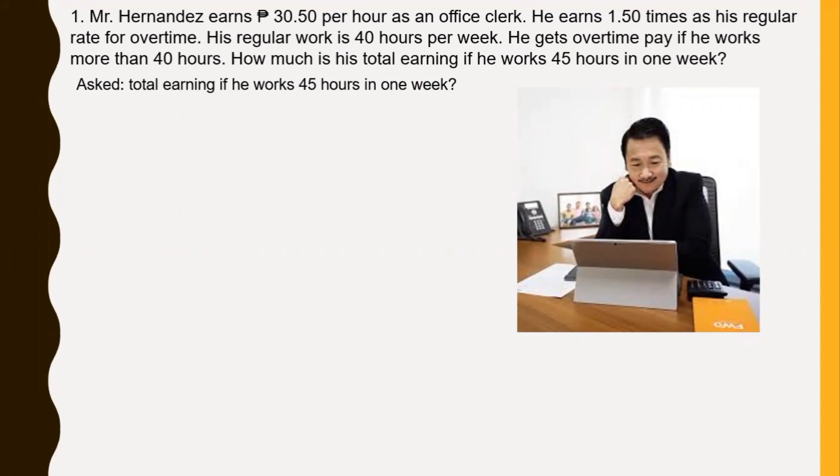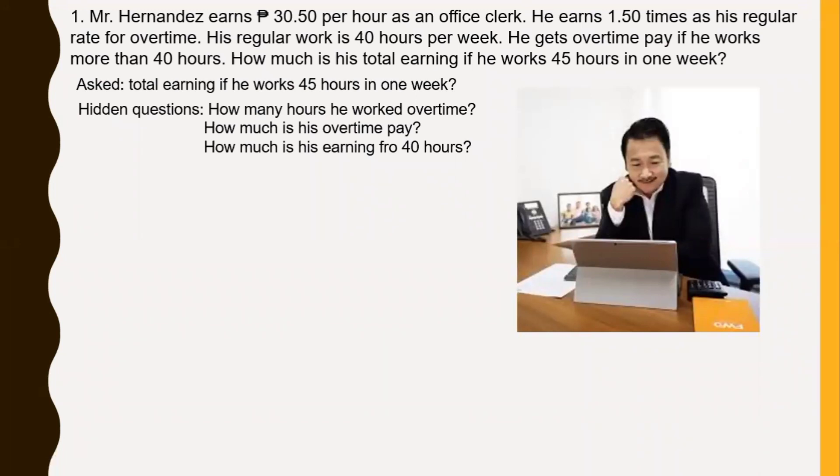But before we get the answer for this question, there are hidden questions. We need to answer or find out first: How many hours did he work overtime? How much is his overtime pay? And another hidden question: How much is his earning for 40 hours? So before we can answer for 45 hours, these are what we need to find out first. And then the given are: 30 pesos and 50 centavos per hour, 1.50 times the regular rate for overtime, 45 total hours in a week, and 40 regular working hours.